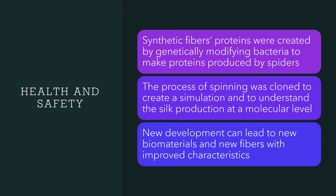Health and Safety: Spider silk has been researched to figure out how it can be used to benefit the medical field. By decoding and producing spider silk in the laboratory, researchers found the ability to produce samples of spider silk. Synthetic fiber proteins were created by genetically modifying bacteria to make the proteins produced by spiders. Researchers were then able to clone the process of spinning to create a simulation to understand silk production at the molecular level. This new development can lead to the creation of new biomaterials such as scaffoldings for organ replacements and new fibers with improved characteristics.